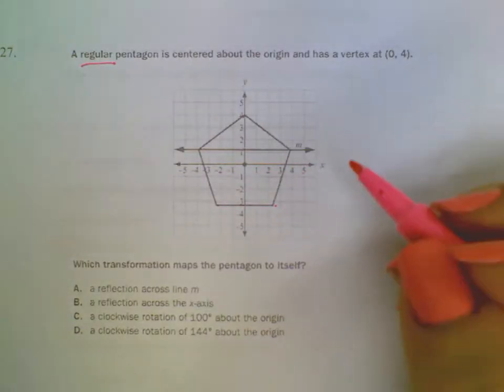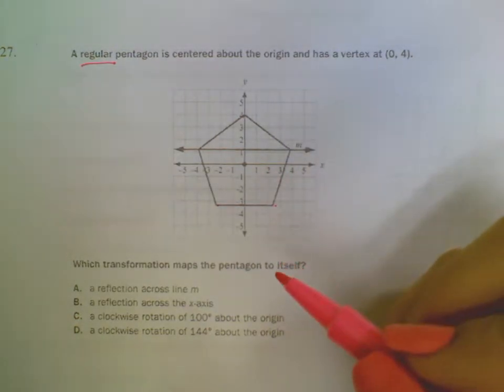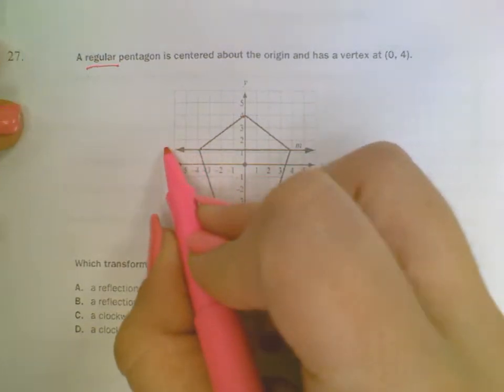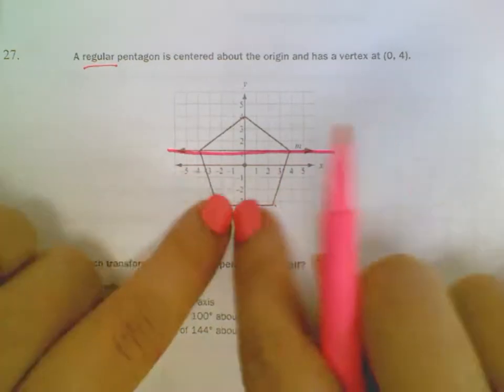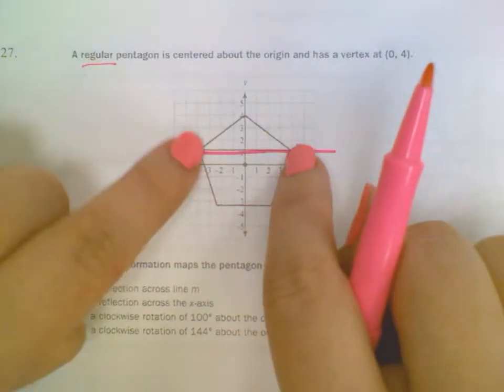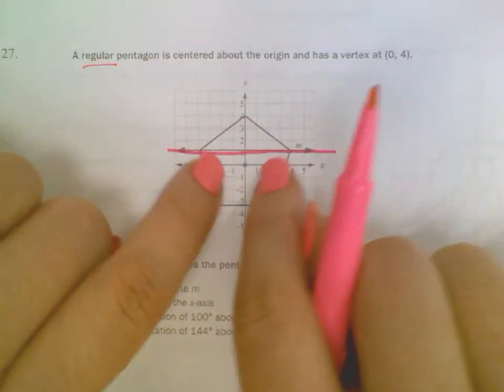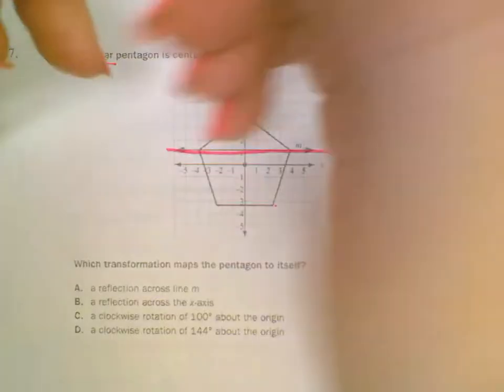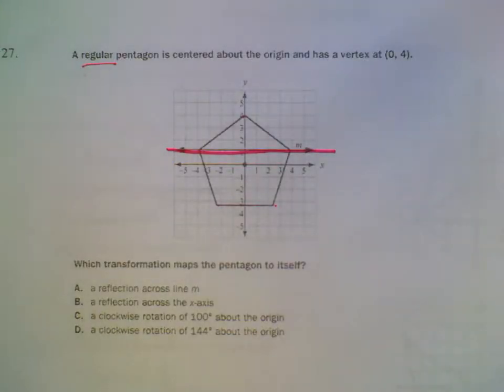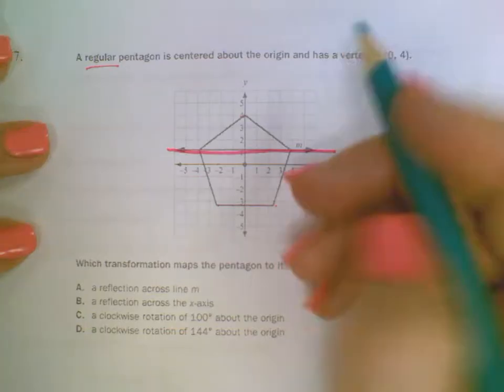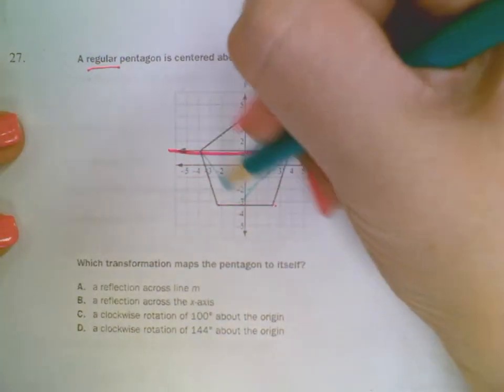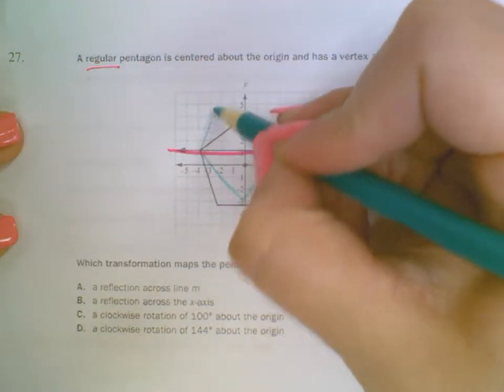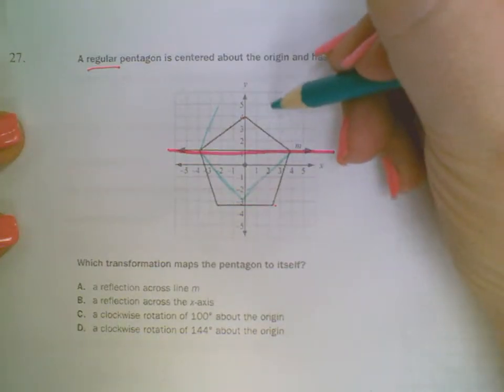So, I can look at my options. A reflection across the line y equals x. If I were to reflect over this line, then this whole thing down here would flip up, and this part on the top would flip down. And we would get, I'll sketch it for you with this blue, we would get something that looks like this a little bit.